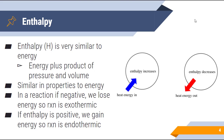If a reaction's enthalpy value is negative, that means we lose energy, so the reaction is exothermic — energy is being released when H is negative. If enthalpy is positive, we gain energy, so the reaction is endothermic. It's very similar to how we looked at energy in joules: if it is positive, energy is going into the system, and if it is negative, energy is leaving the system.